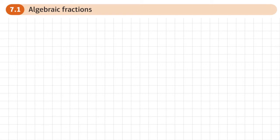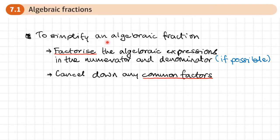This is the first section of chapter 7 on algebraic methods, and this section is all about algebraic fractions. So if we want to simplify an algebraic fraction, there are two things we need to do: factorise the algebraic expressions in the numerator and denominator, if it's possible to factorise them. And then once we factorise them, we look for common factors in the numerator and denominator and cancel them out.